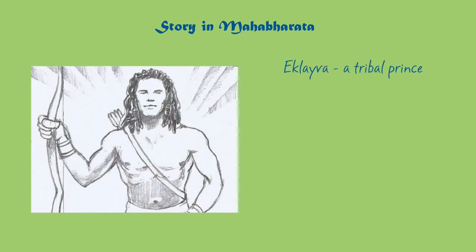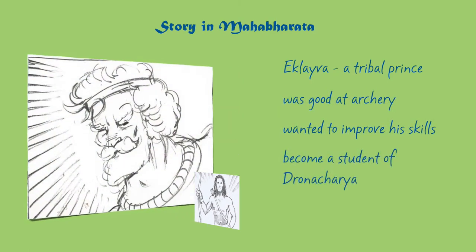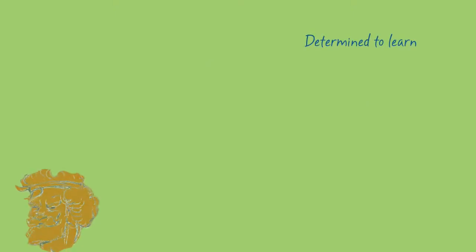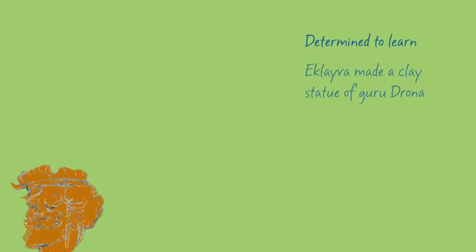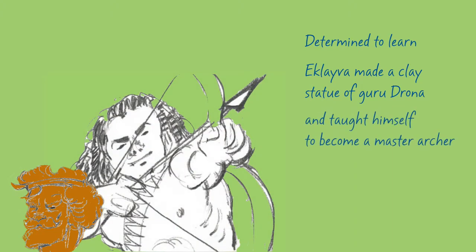Eklavya was good at archery. He wanted to improve his skills by becoming a student of the royal guru Dronacharya. However, because of his lineage, Dronacharya refused to accept Eklavya as a student. Determined to learn archery, Eklavya made a clay statue of guru Dronacharya and taught himself to become a master archer.